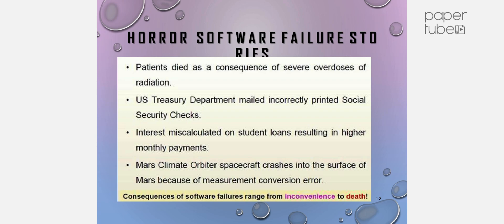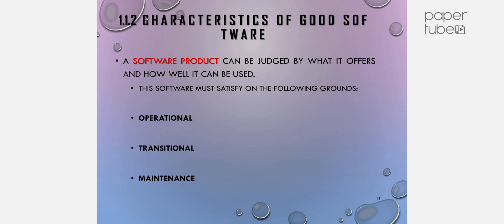Software failures can cause serious consequences, even death. Good software must have key characteristics. These are: Operational — it should perform its functions correctly; Transitional — it should be Portable, Interoperable, Reusable, and Adaptable.